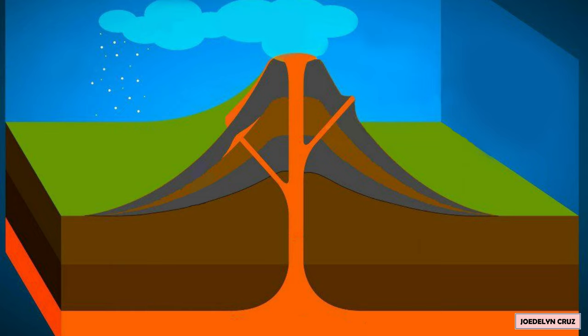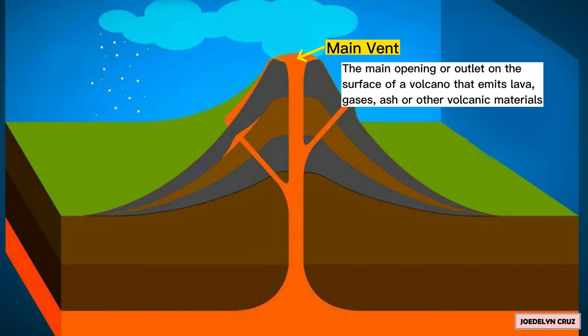Main Vent. Main Vent is the main opening or outlet on the surface of a volcano that emits lava, gases, ash, or other volcanic materials.